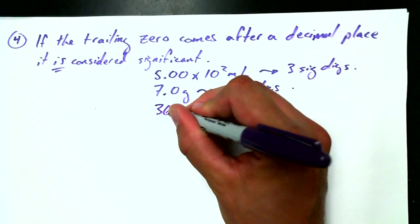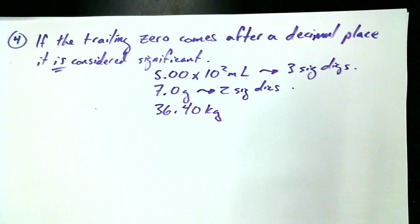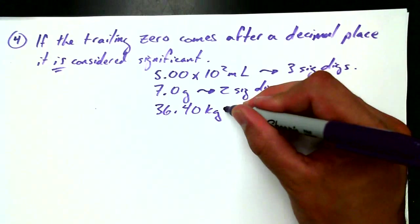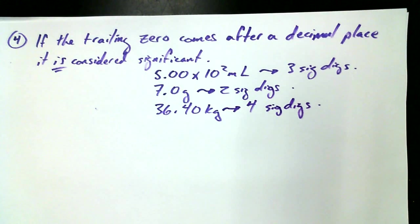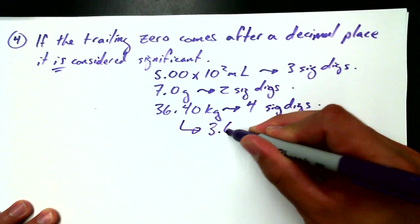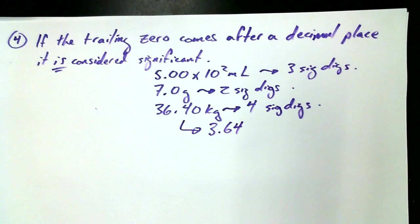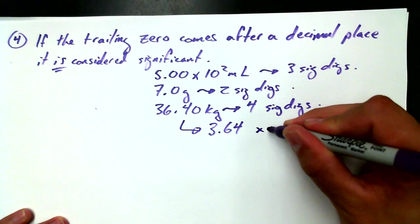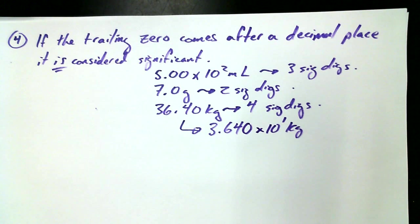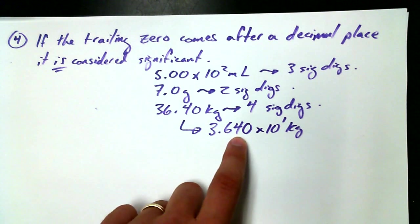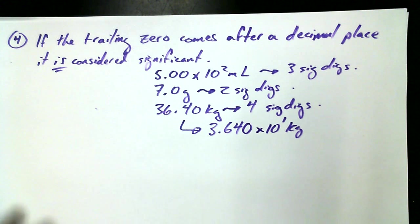All right, what about this one? 36.40 kilograms. How many significant digits is that? Four. It is four. Yeah. All right. Now, if I really wanted to be fancy with this, I could turn 36.40 kilograms into scientific notation. What would it look like in scientific notation? 3.64, well, the zero we just said was significant. Yeah, times 10 to the one. So it is times 10 to the one kilograms. But we have to also include the zero because we just claimed that this measurement here, 3.640, has four significant digits. So if I want to turn it into scientific notation, I have to take all four of those significant digits into the scientific notation along with me.